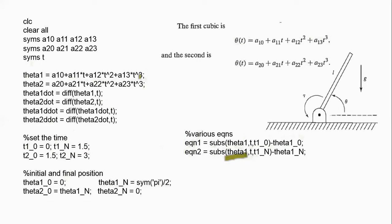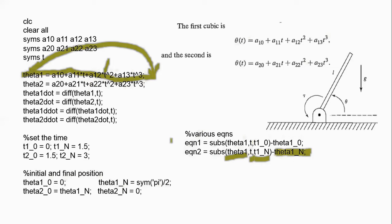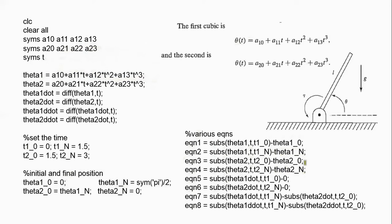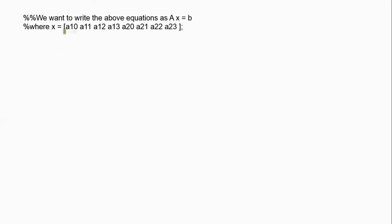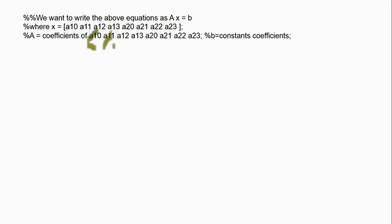Similarly, if you put t = t1n in the expression of theta1, you get theta1 = theta1n. Bringing theta1n to one side gives 0 = subs(theta1, t, t1n) - theta1n. You will get all 8 equations this way. Corresponding to these initial and final conditions, you get 8 simultaneous equations which can be written in the form Ax = b, where x is the vector of cubic parameters a10, a11, a12, ... a23, and b contains the constant coefficients.